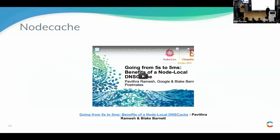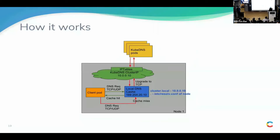We stumbled across a presentation called 'Going from five seconds to five milliseconds — benefits of a node local DNS cache' by Pavitra, Ramesh, and Blake Barnett. It presents a Kubernetes enhancement proposal for running a DNS cache on every single node. Your client pod, instead of sending DNS requests directly to kubeDNS or CoreDNS, talks to a local DNS cache on the node running on a link-local IP. This cache handles all requests and upgrades them to TCP before sending to kubeDNS — so because it caches, it's faster, and because it upgrades to TCP, requests leaving your node are no longer affected by the conntrack problem.